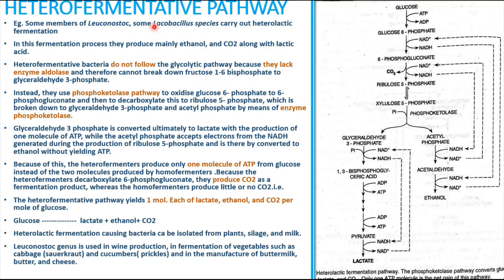Regarding the hetero-fermentative pathway, you need to know the species involved, the phosphoketolase pathway used to convert glucose to lactate, the enzymes involved, and the ATP yield. The hetero-fermentative pathway produces only 1 ATP, whereas in the homo-lactic pathway we get 2 ATP — this is an important point to remember.